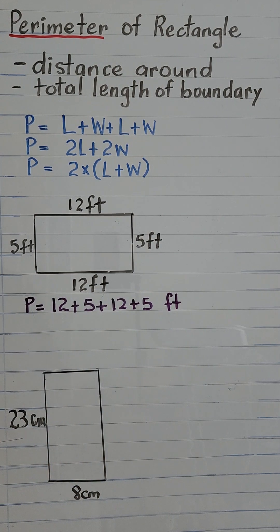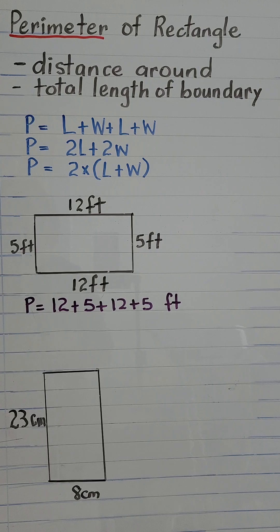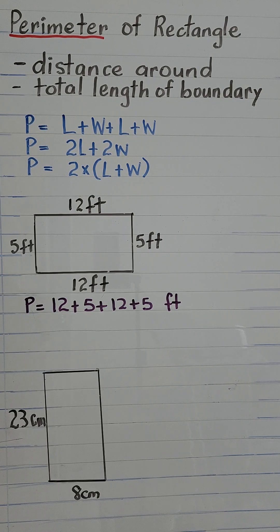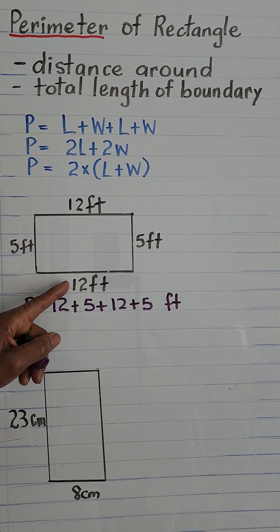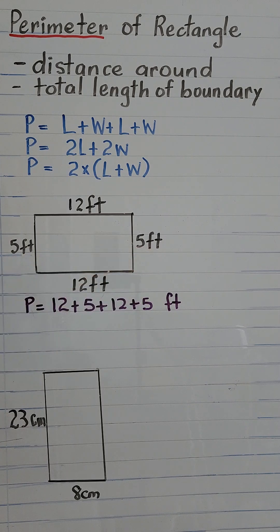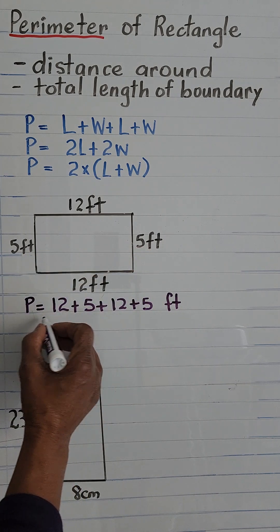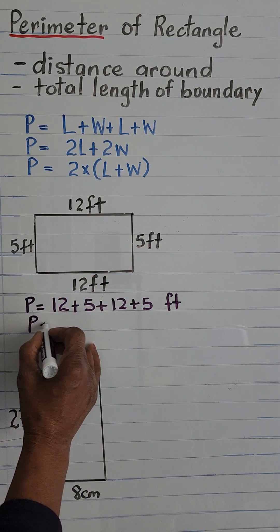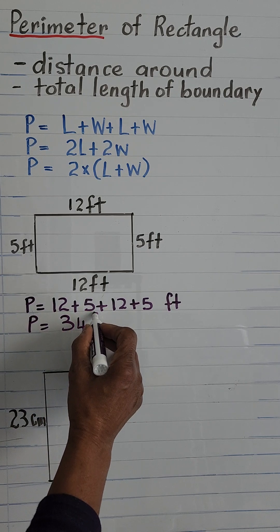12 plus 5 plus 5 plus 12 is equal to 12 plus 12, 24, 5 plus 5, 10. So that is P is equal to 34 feet.